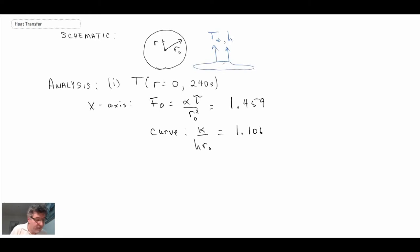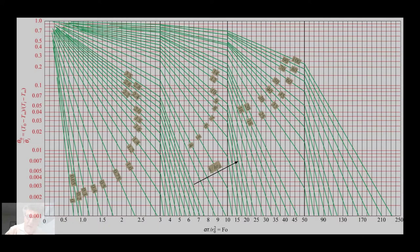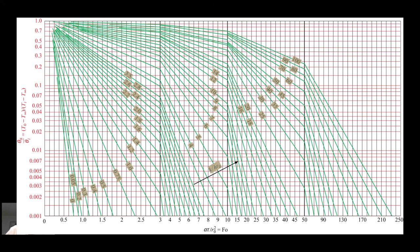And the curve that we read is one over the Biot number, so k over hr naught. Okay, so those are the two values. Once we have them, then what we can do is go to our Heisler charts. So let's take a look at the Heisler chart. Here we are, very busy chart, a lot of stuff going on, but it's not as bad as it might immediately look when you first look at it.